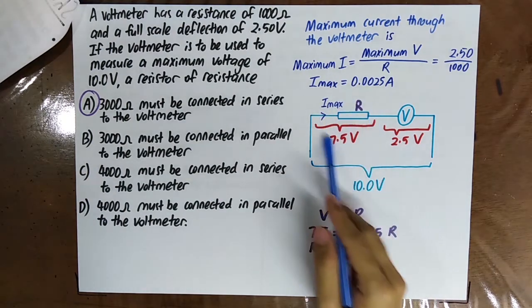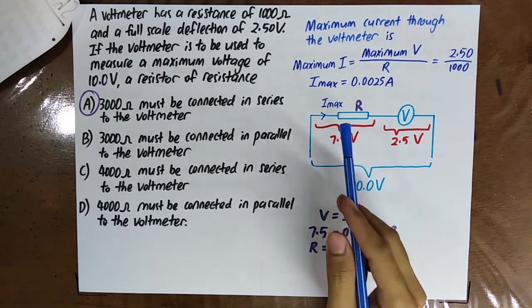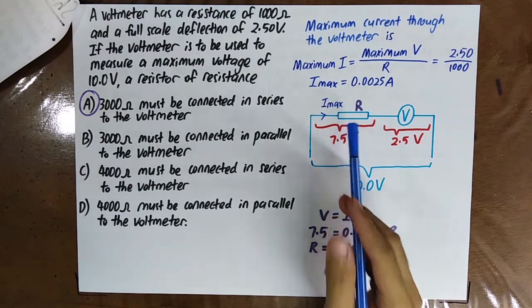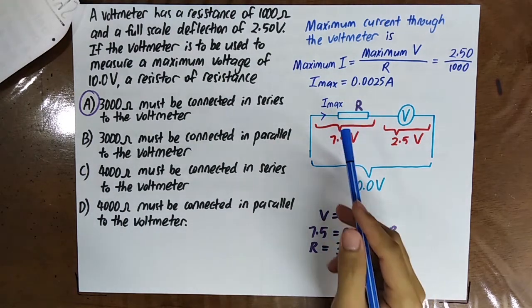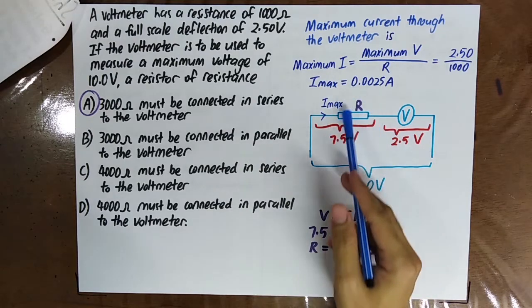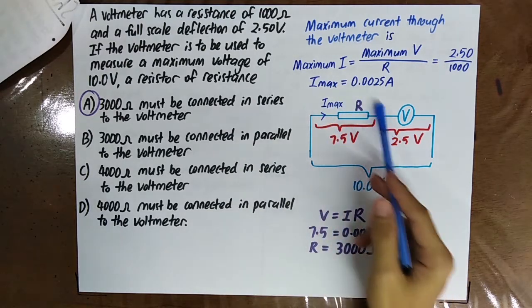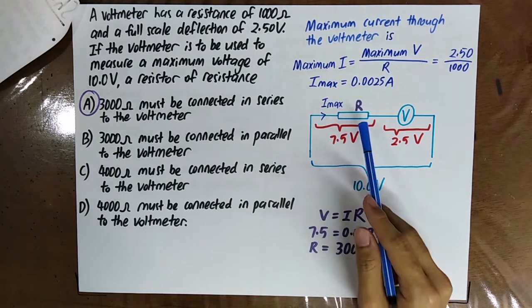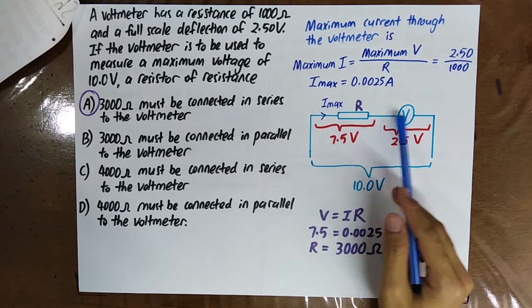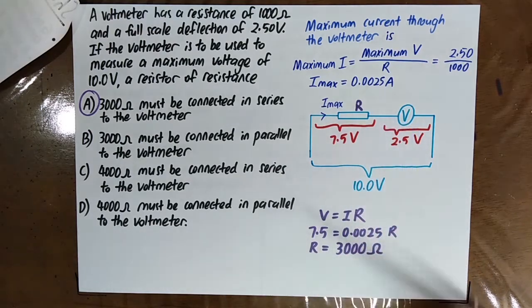Actually, this is a multiplier — because a multiplier is just a resistor with very, very high resistance connected in series with the voltmeter.